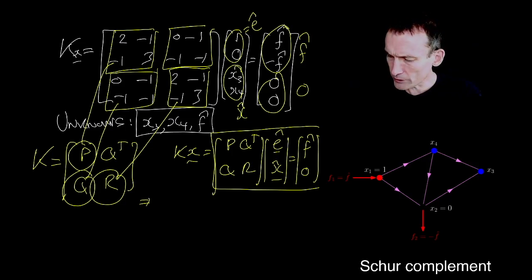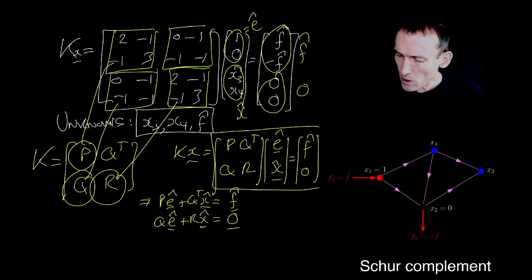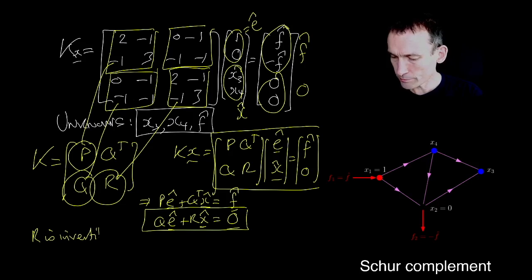Let's multiply out using this kind of sub block structure. Then I noticed that I can get P E-hat plus Q transpose X-hat is equal to F-hat. And then Q E-hat plus R X-hat, these are all vectors, is zero. I'm just underlined the vectors just to emphasize that they're the vectors.